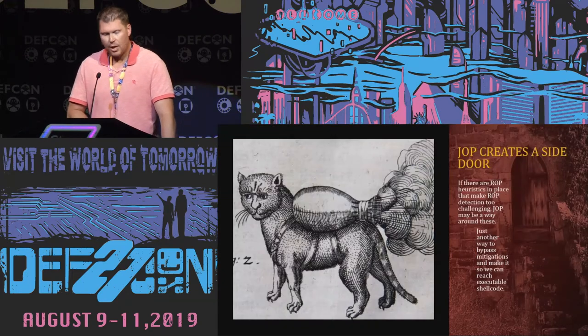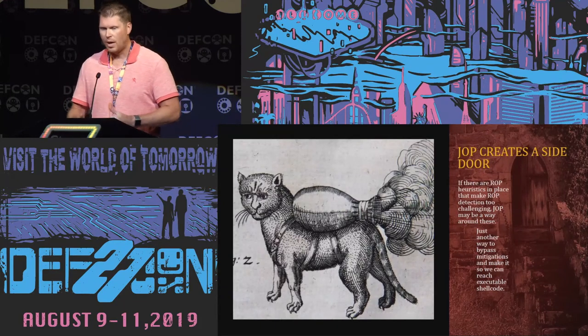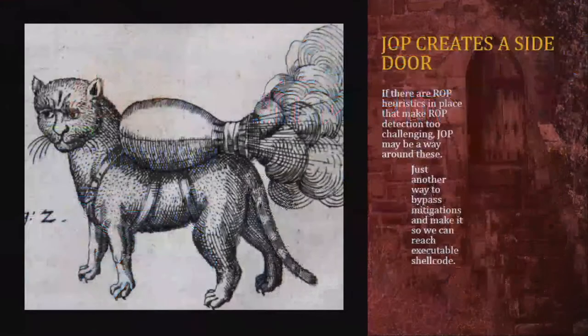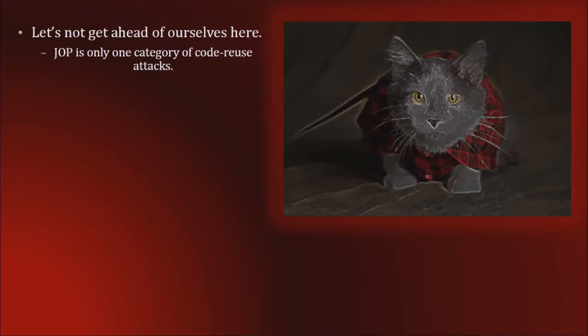What is JOP? Simply put, it creates a side door. If you're having trouble with your exploit chains with ROP and the ROP heuristics being detected, then JOP may allow you to bypass those mitigations and ultimately get shellcode to execute. We're not trying to oversell the JOP rocket though, because JOP is just another category of code reuse attack — it is not another category of exploit.